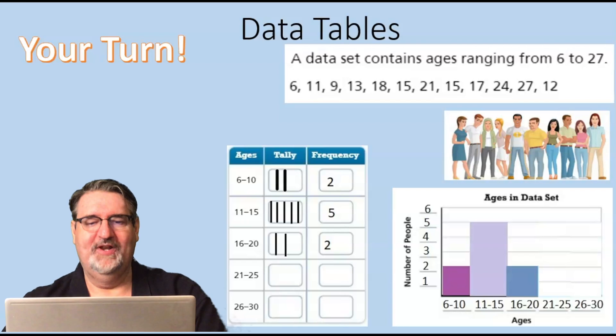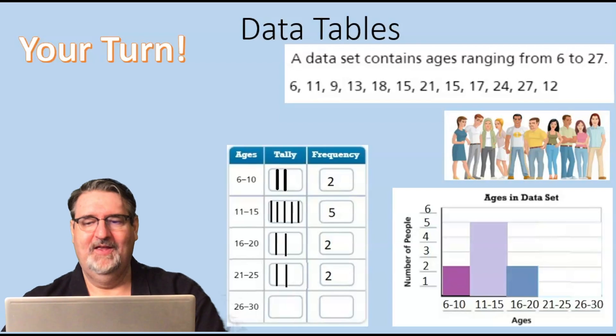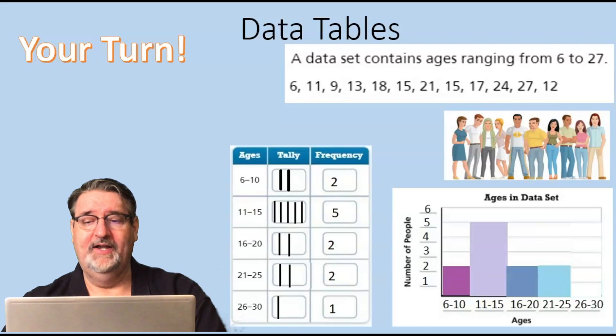For ages 21 to 25, there are 2. And on the graph, there it is. Finally, 26 to 30, there is only 1, and so we chart that 1 on the graph.